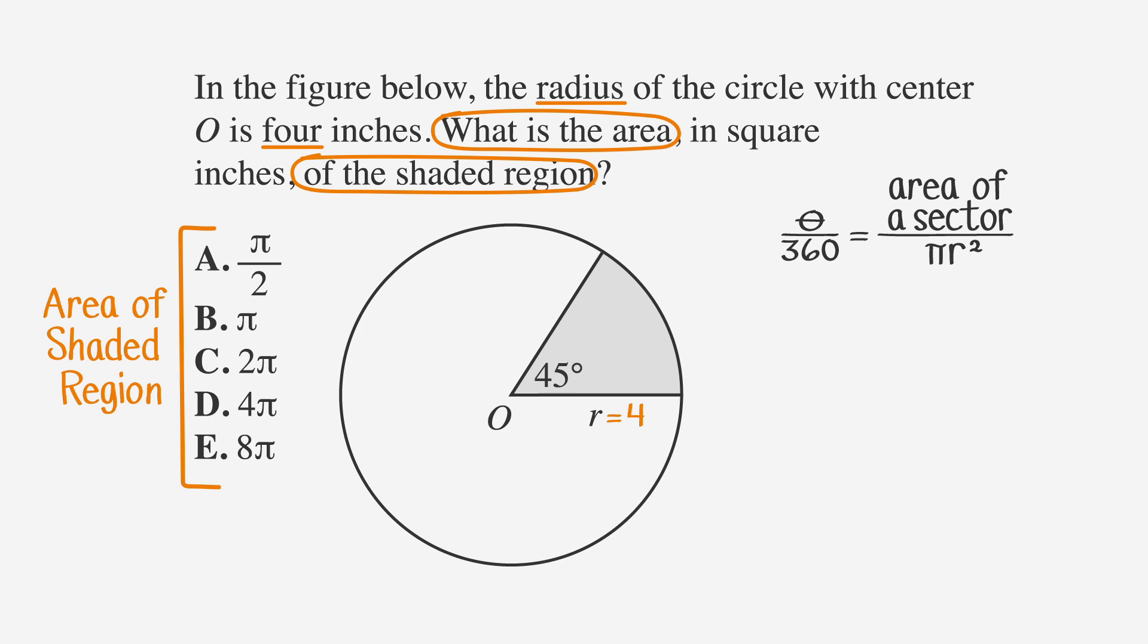Now let's set up a ratio to solve for the area of this sector. Our central angle is 45. We'll call the area of the sector x, and our radius is 4. So let's rewrite this as 45 over 360 equals x over 16π. Now let's cross multiply to solve for x.